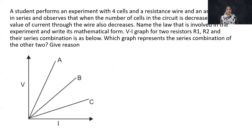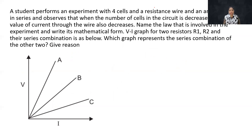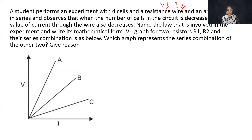A student performs an experiment with four cells and a resistance wire and an ammeter in series, and observes that when the number of cells in the circuit is decreased, the value of current through the wire also decreases. Name the law involved in this experiment. The answer is Ohm's law — potential difference is directly proportional to current.